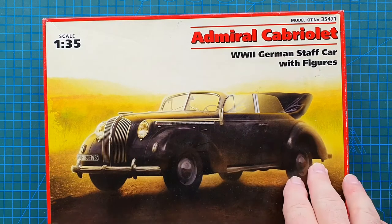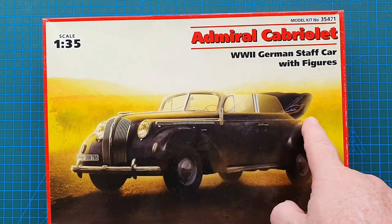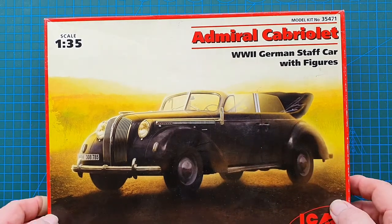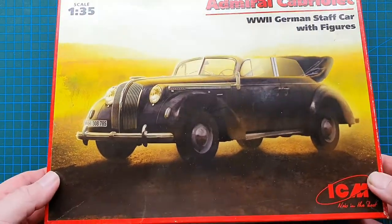There she is as you can tell. She's a Cabriolet so it basically means that the roof falls back. It's a soft top. Let's have a look at the box and see what we've got.